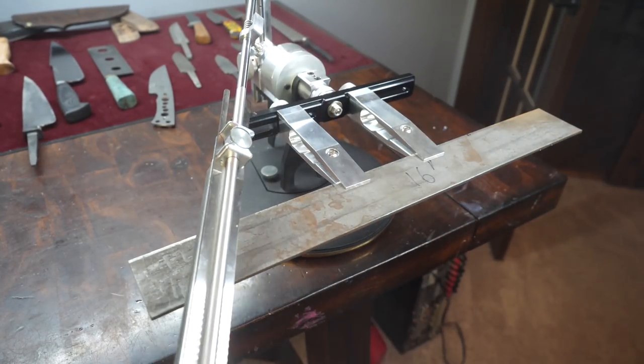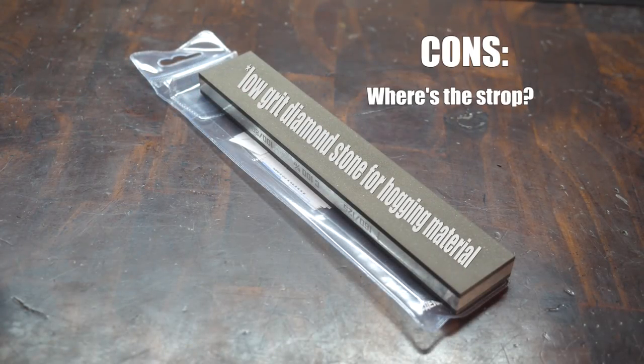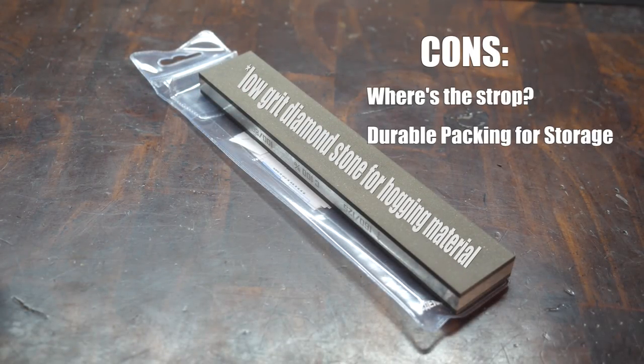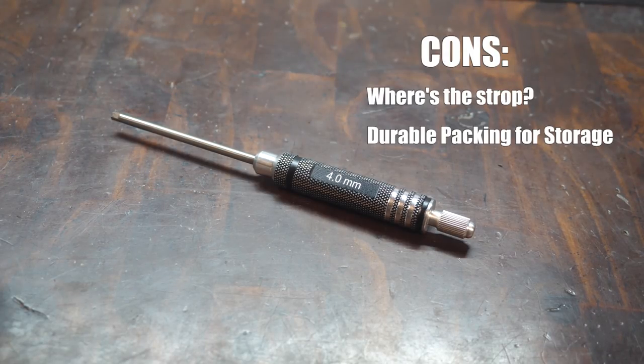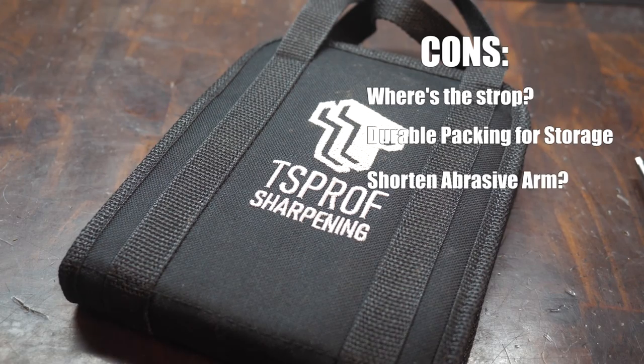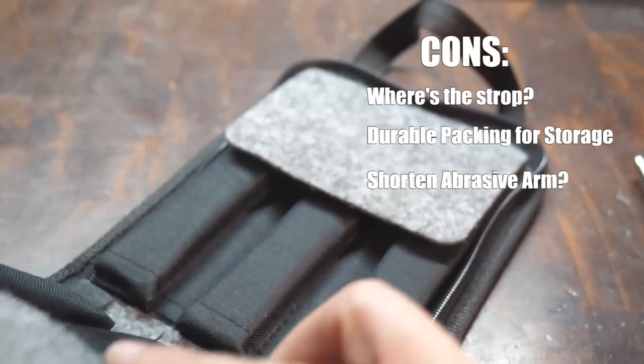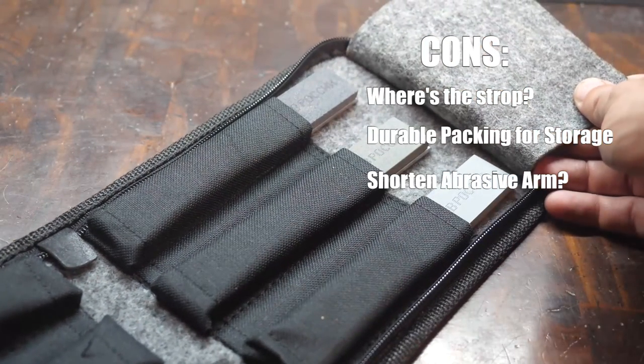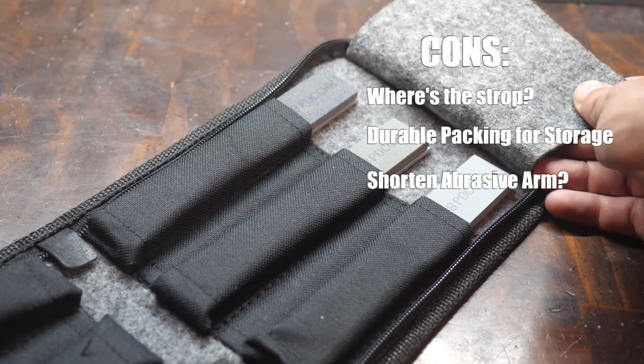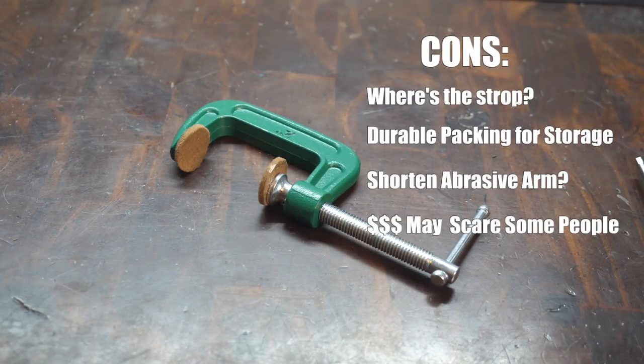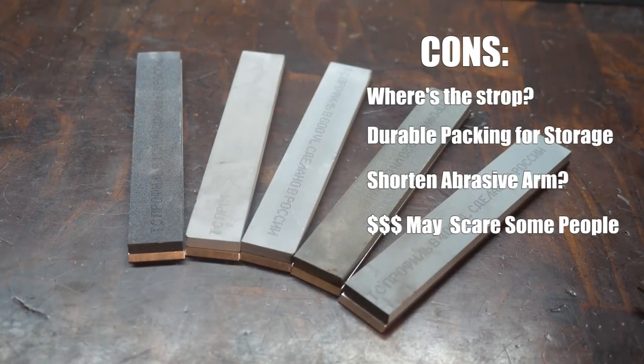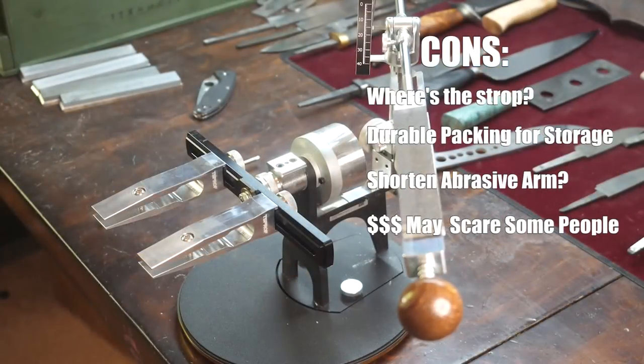We'll run some pros and cons. Cons first. It should come standard with the strop. Next is I wish the wooden crate packaging was durable, custom fit, open cell foam for repacking and storage in a crate. Not that big a deal. If there was some way to fold or shorten the abrasive arm bar without taking it apart to decrease the sharpener's footprint, that'd be pretty sweet too. Price is both a pro and a con. I'll tell you why it's a con first. The price just puts it out of reach for some knife lovers, and that's sort of a shame. I think if an enthusiast skips a few knife purchases or gets their family to do a group buy at Christmas or birthday, it's probably still doable.